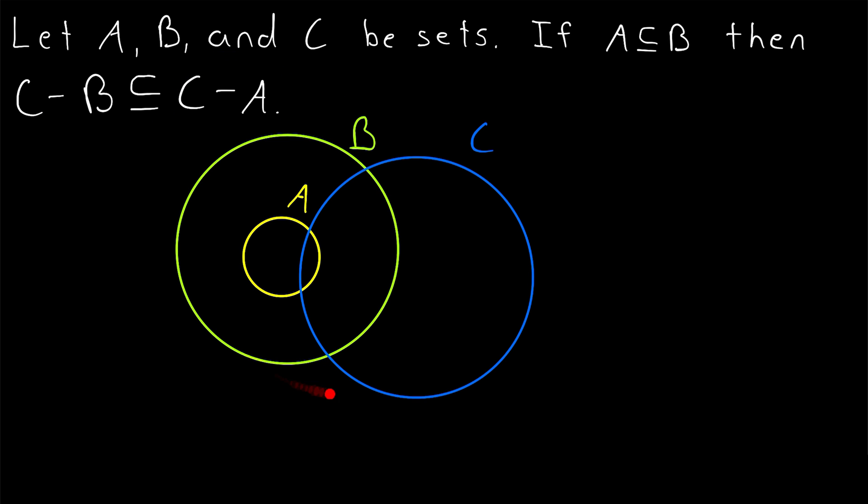Visually, our situation might look something like this. When we subtract the set A from the set C, we're going to have most of C left over. When we subtract B from C, we'll have a smaller piece left over, which is a subset of C minus A.